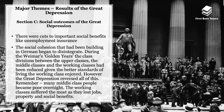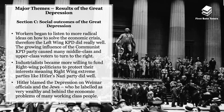The Great Depression reversed the social gains of Weimar's golden years. Many middle-class people became poor overnight and the working classes suffered most, losing jobs, property, and social benefits. Workers began listening to more radical ideas, meaning the KPD did well, and the growing communist influence caused many in the middle and upper classes to turn to the extreme right. Industrialists became far more willing to fund right-wing politicians like Hitler to protect their interests. Hitler skillfully blamed the depression on Weimar officials and on Jewish people, labeling them as wealthy and behind the economic problems of working-class Germans.